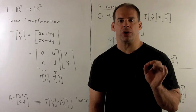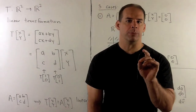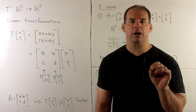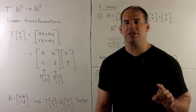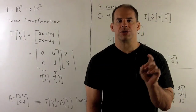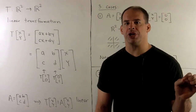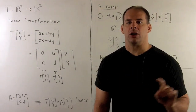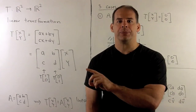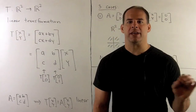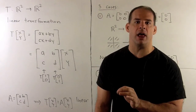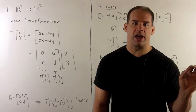If we want to develop intuition about linear transformations, a good place to start is the two-dimensional case. The visual idea here is that linear transformations carry linear things to other linear things. A linear transformation will carry the origin to the origin, lines through the origin to lines through the origin or the origin itself, and planes through the origin to planes, lines, or the origin itself.